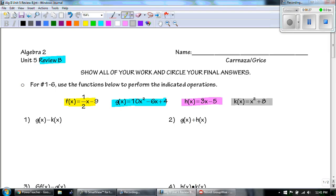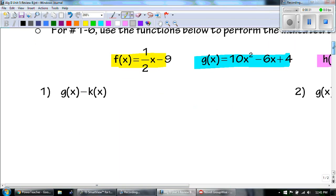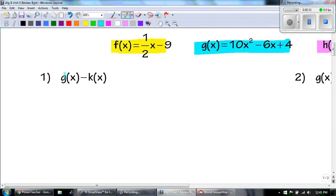Hey guys, this is Mr. Grice for Algebra 2 Unit 5 Review B. Remember to show your work and to circle your final answers. Number 1 through 6 says to use the functions below to perform the indicated operation.